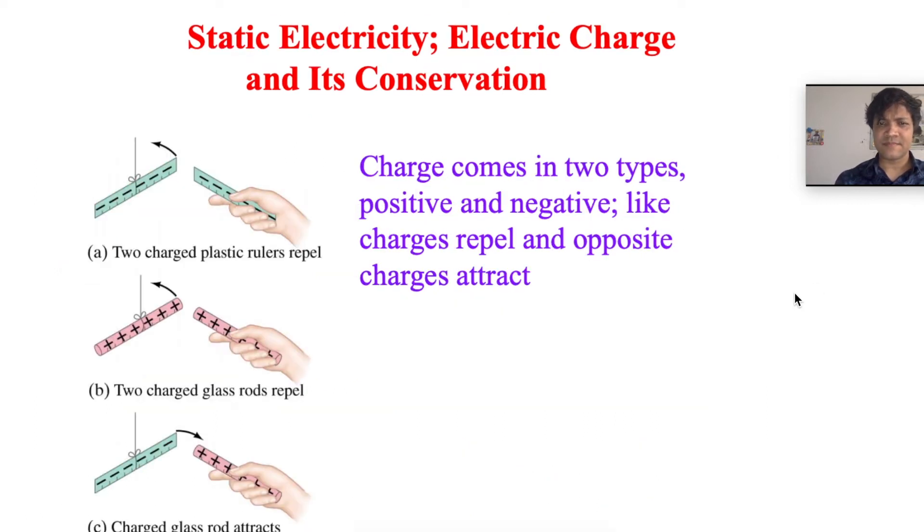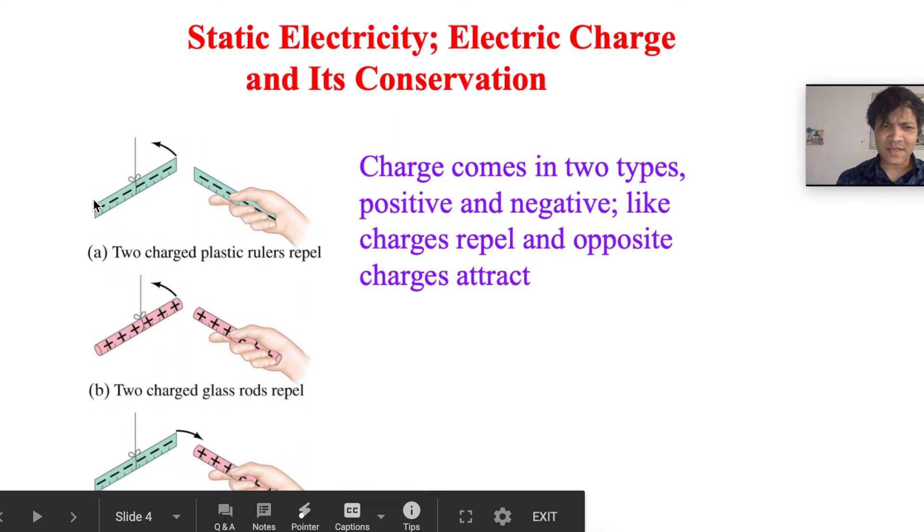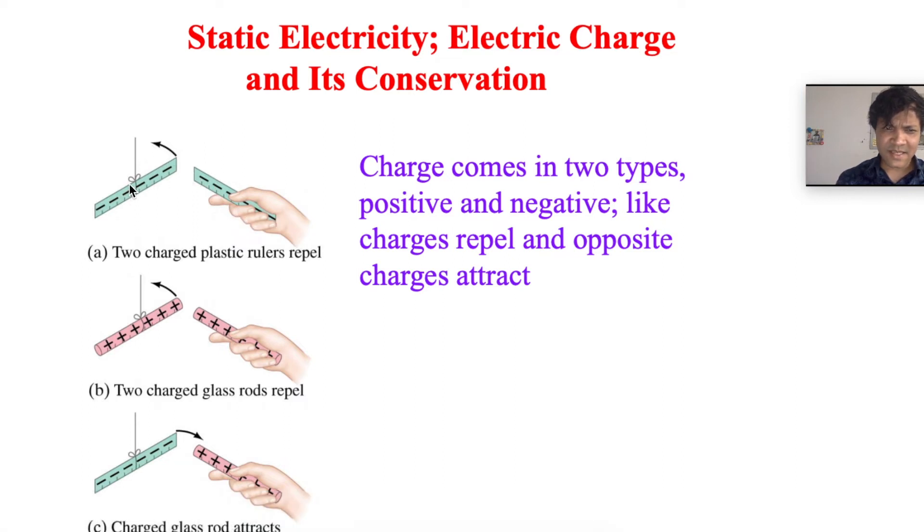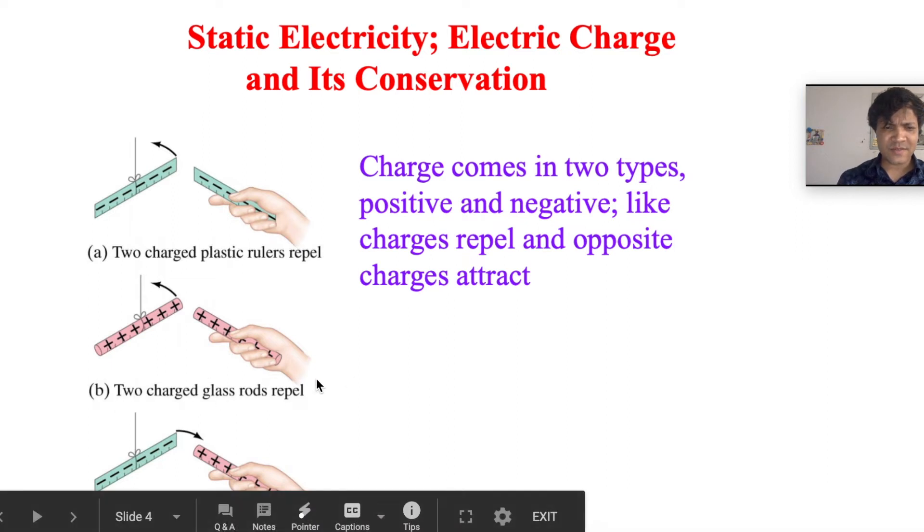Charge comes in two types: positive and negative. Like charges repel and opposite charges attract. Two charged plastic rulers repel each other because both are negatively charged. Two charged glass rods repel because both are positively charged. Positive doesn't like positive, but negative and positive attract each other.